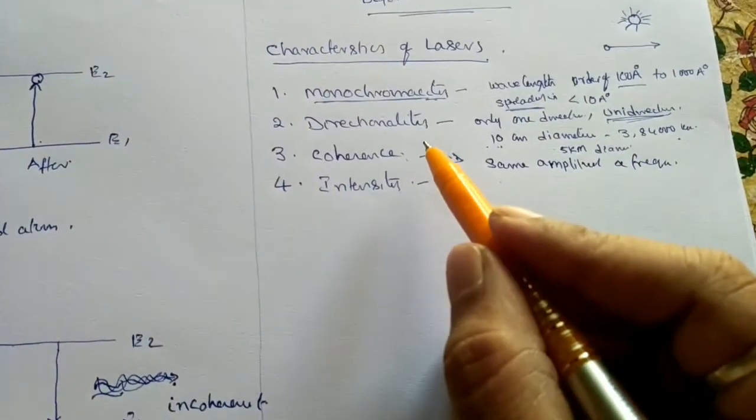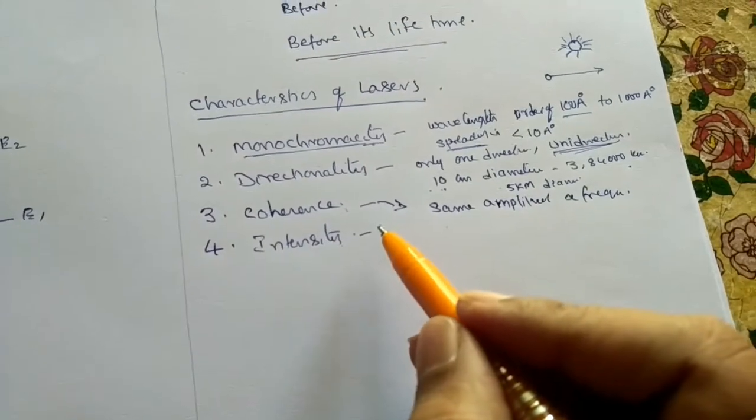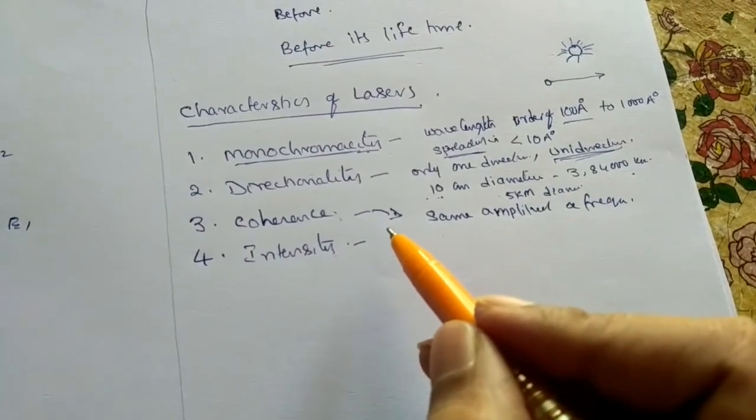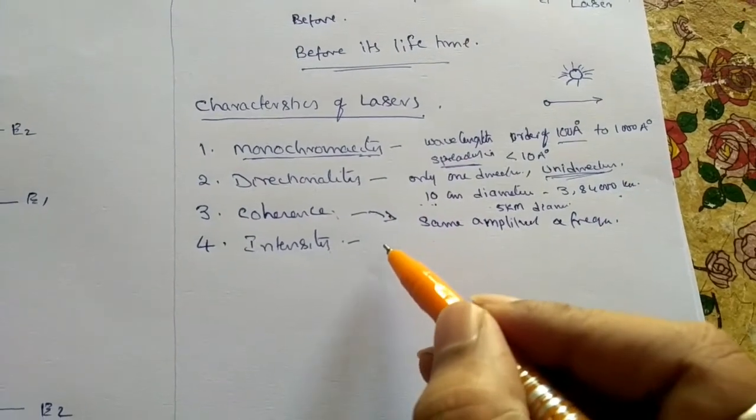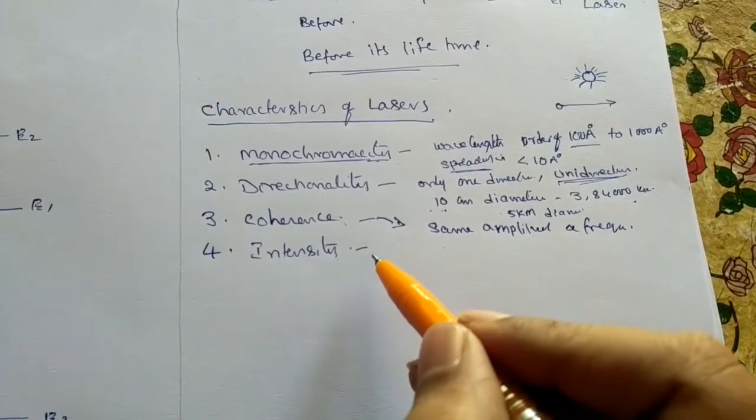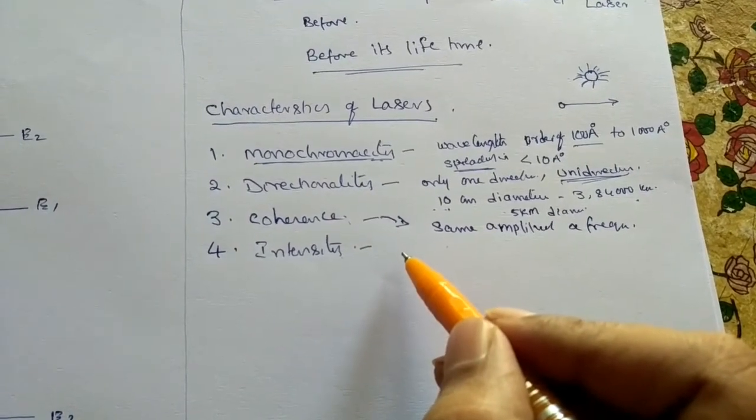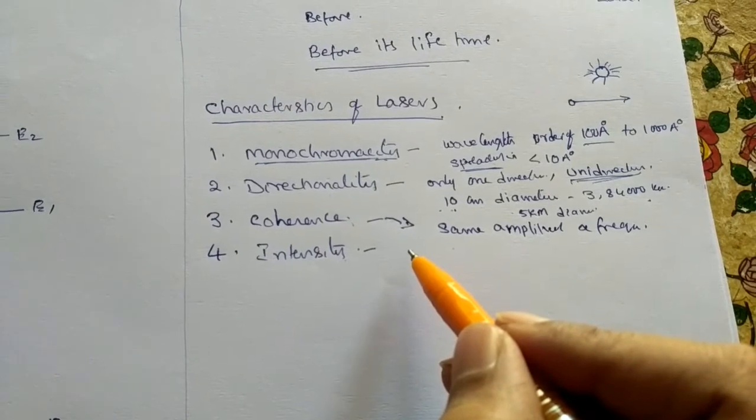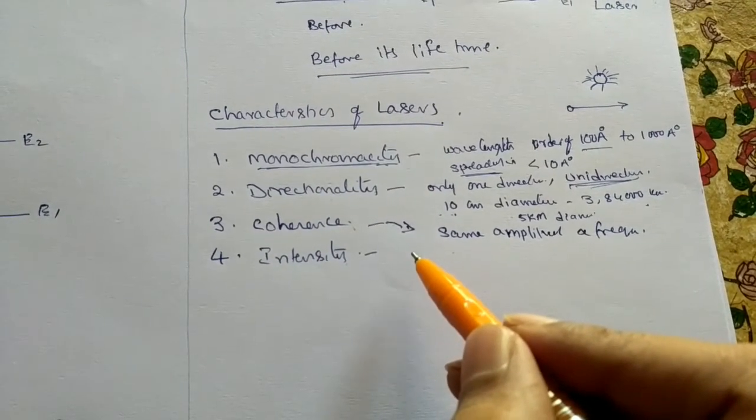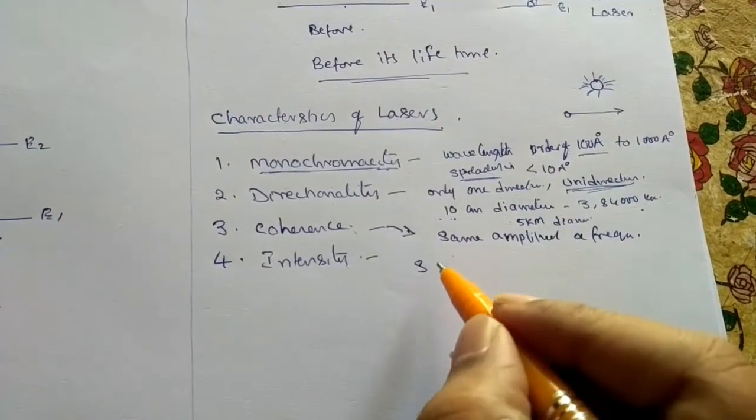Another one is intensity. Generally, our conventional sources like candle bulb, LED bulb, or other light sources decrease rapidly with distance because they're having spherical waves. These conventional sources emit spherical waves.